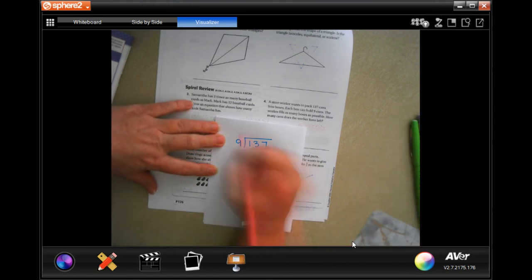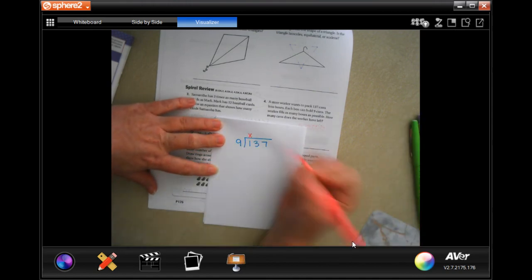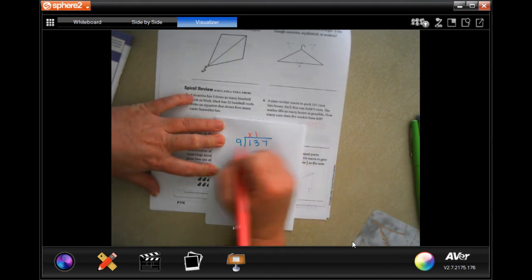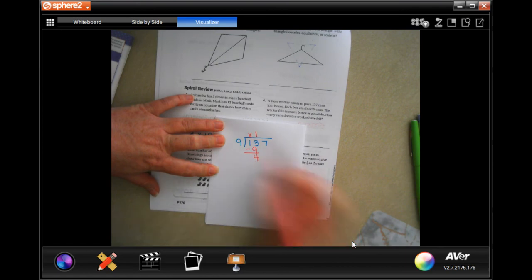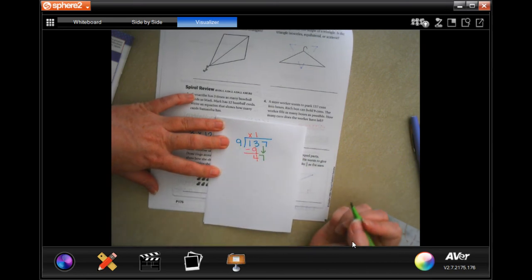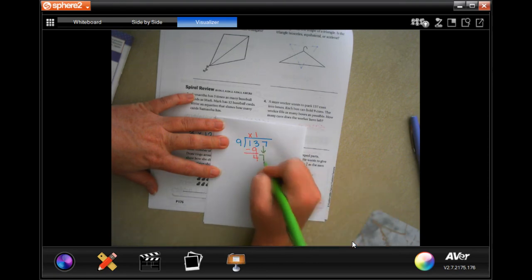Nine's not going to go into one, so we're going to put a placeholder. Nine will go into 13 one time. One times nine is nine. We're going to subtract and get four. Four is smaller than seven, four is smaller than nine, so I'm going to bring down my seven.